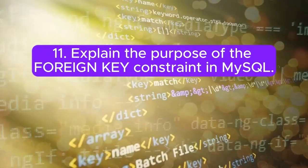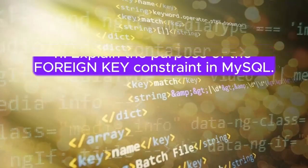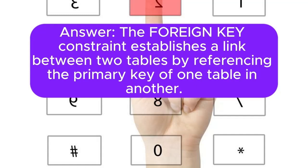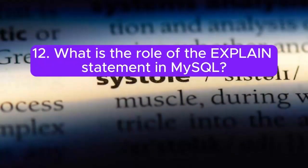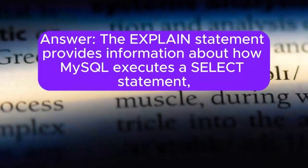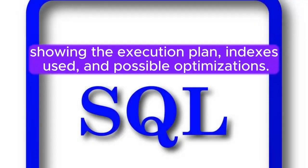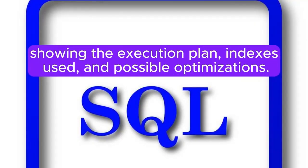Question 11: Explain the purpose of the foreign key constraint in MySQL. Answer: The foreign key constraint establishes a link between two tables by referencing the primary key of one table in another. It enforces referential integrity. Question 12: What is the role of the EXPLAIN statement in MySQL? Answer: The EXPLAIN statement provides information about how MySQL executes a SELECT statement, showing the execution plan, indexes used, and possible optimizations.